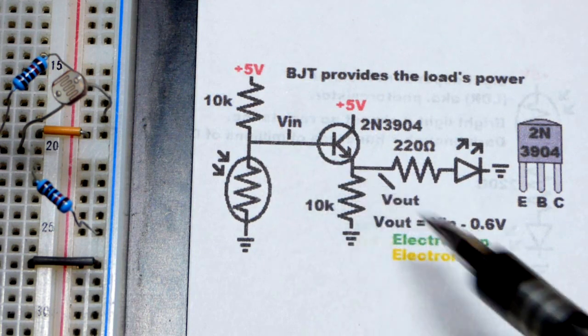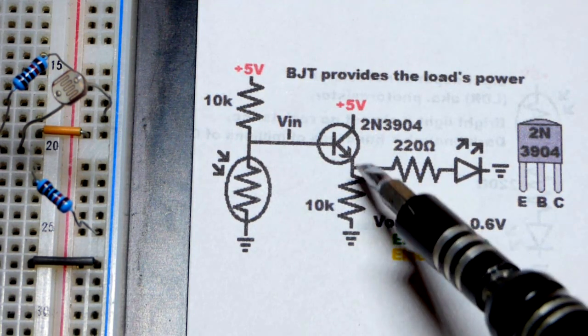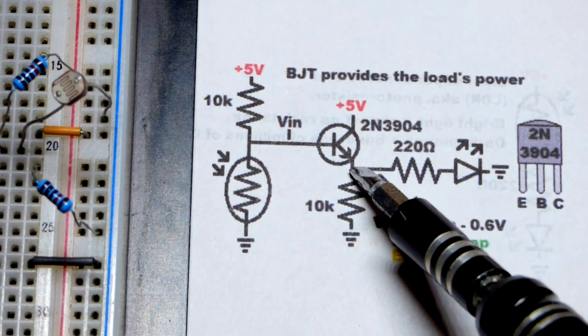But otherwise, it's transferring the voltage, just 0.6 volts lower. And so, we got the voltage at the emitter.